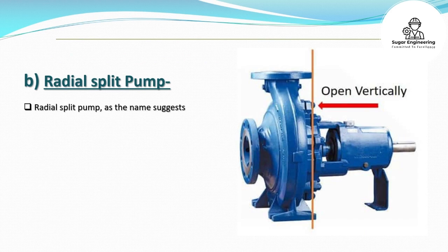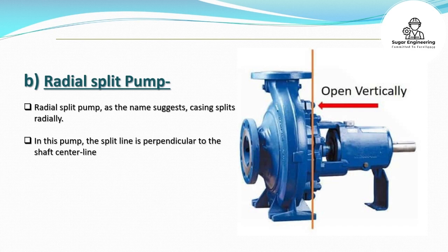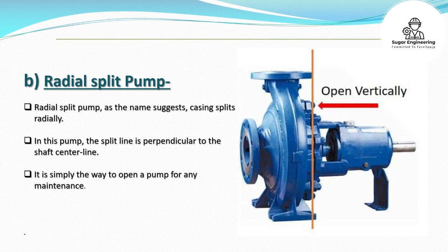B. Radial split pump. As the name suggests, the casing splits radially. In this pump, the split line is perpendicular to the shaft centerline. It is simply the way to open a pump for any maintenance.